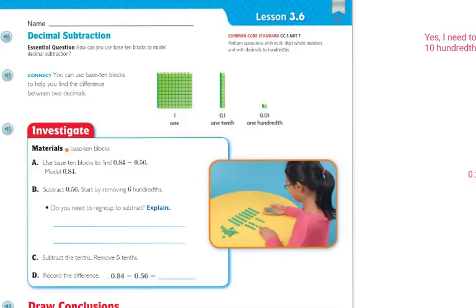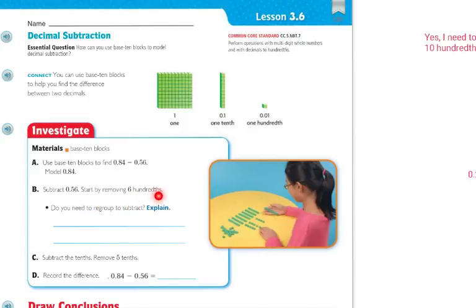I have them on the floor if you need them. So we're going to use the base 10 blocks to find 84 hundredths minus 56 hundredths, and the model that we're going to start with is 84 hundredths. We're going to subtract 56 hundredths. Start by removing the six hundredths. Do you need to regroup when you're removing the six hundredths?